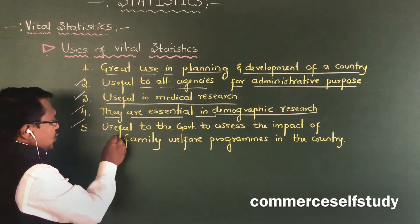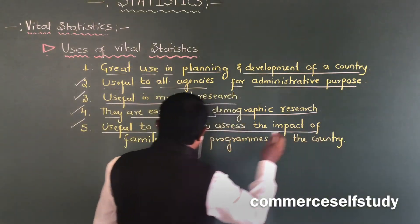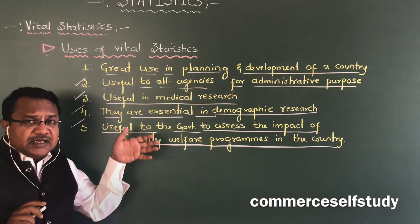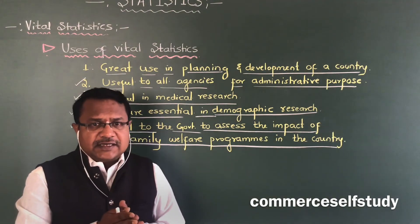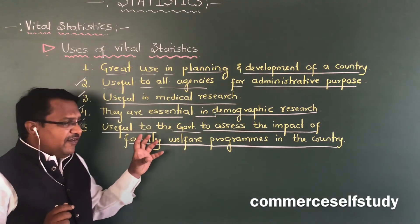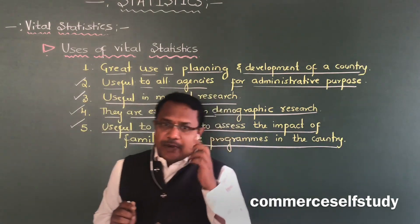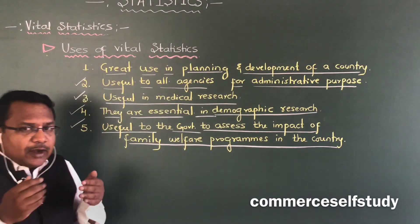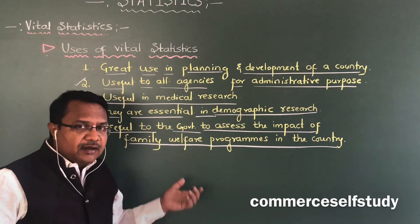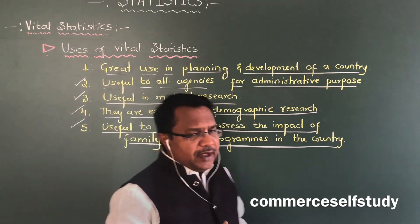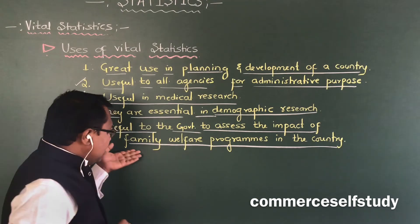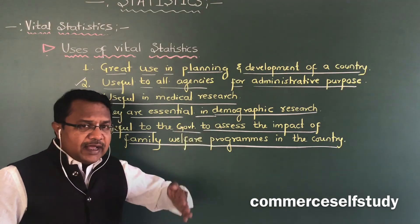The fifth and last point is: vital statistics is useful to the government to assess the impact of family welfare programs in the country. Vital statistics is very helpful to assess to what extent family welfare programs have been successfully implemented in the state or in the country. The social welfare department and central government come out with many programs, and vital statistics helps analyze to what extent these programs reach the public and how successful they are.